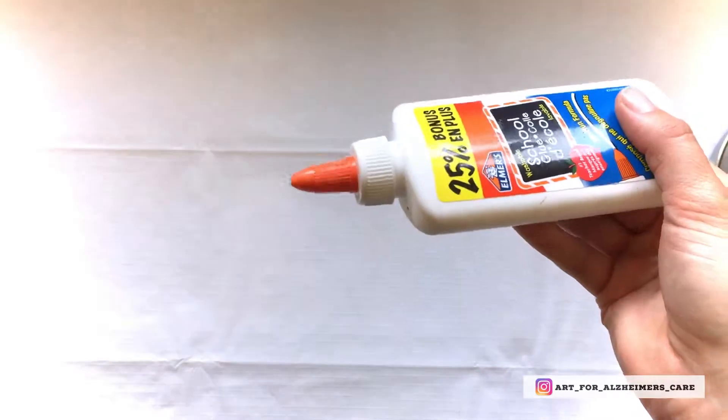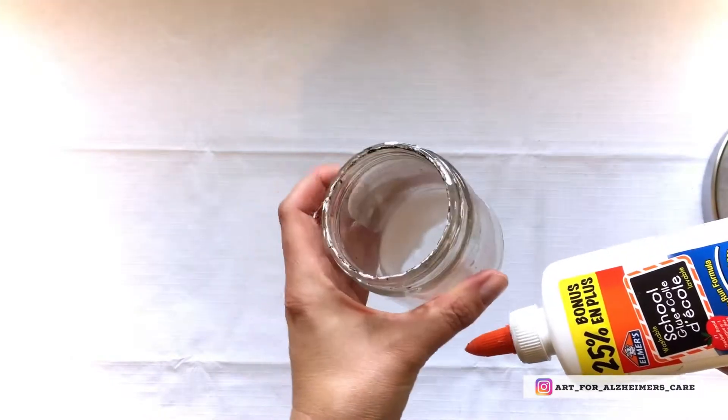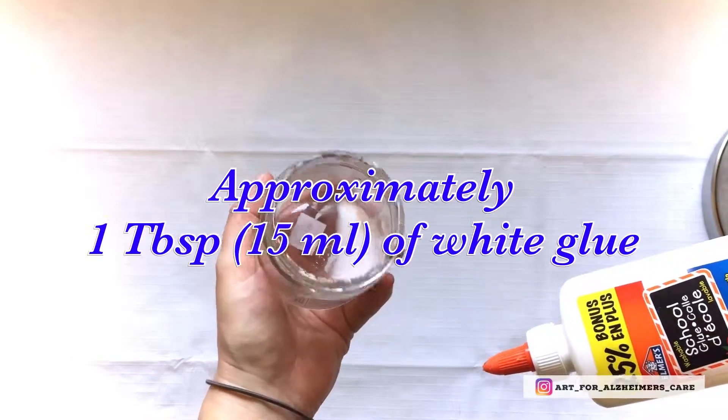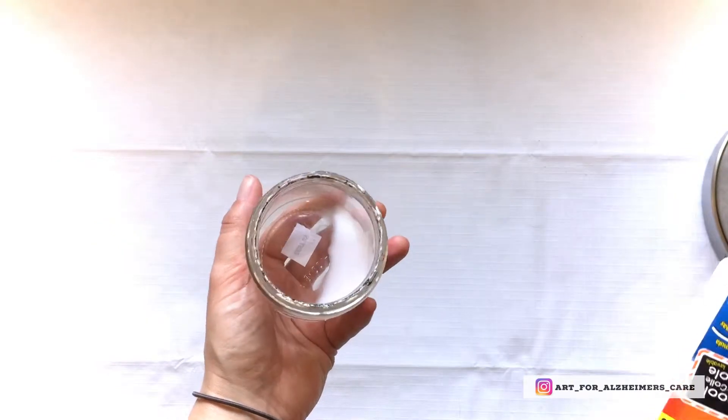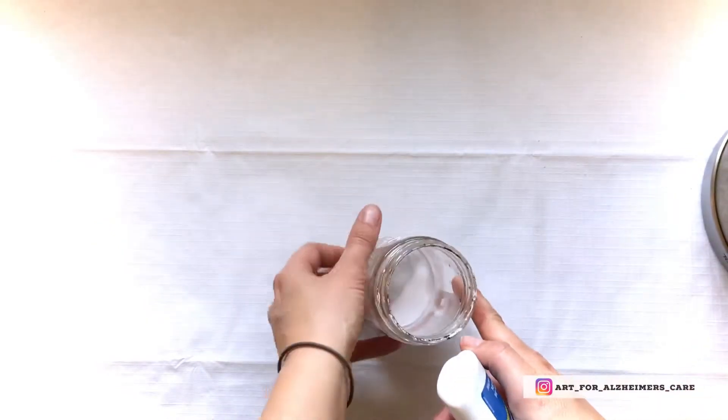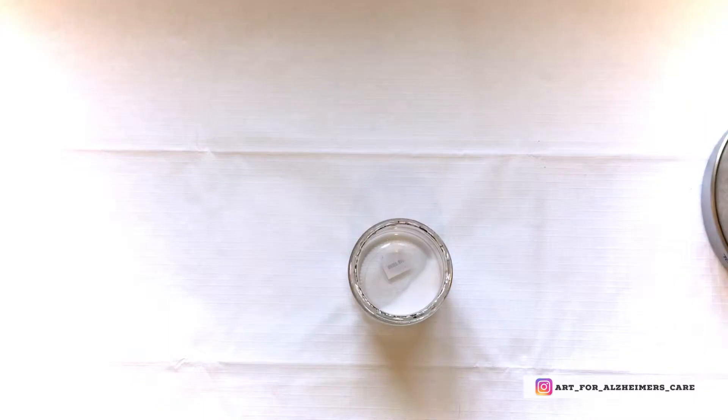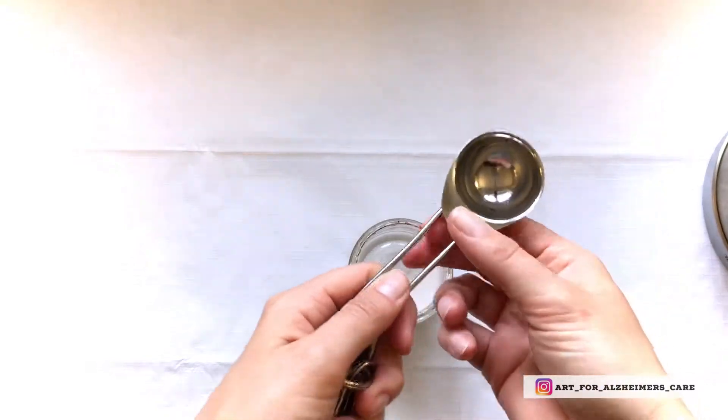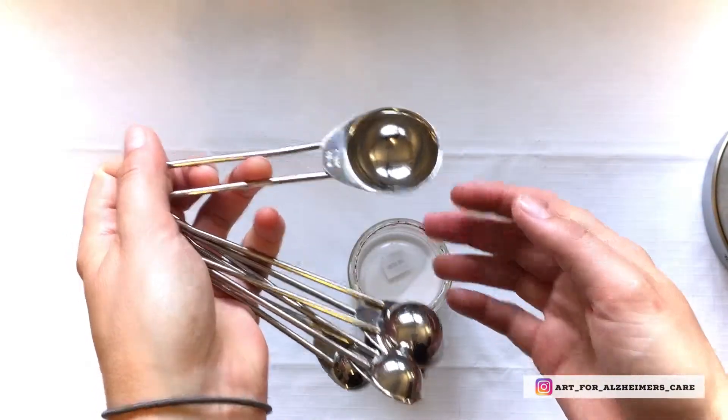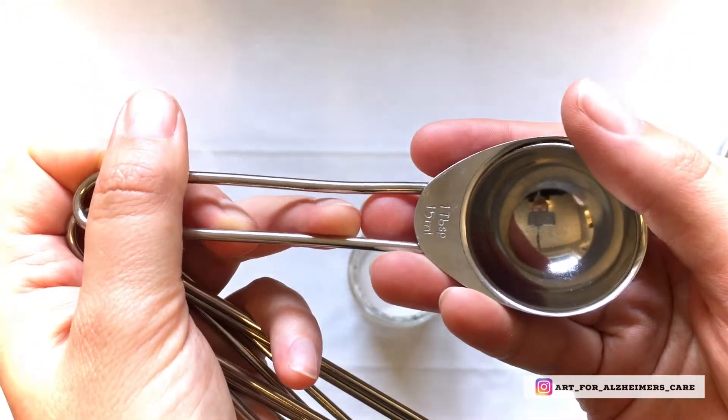So to prep for this project you're going to need to prep some paste that we will use later on with the tissue paper. So I've got about one tablespoon of white glue in this glass jar here and I'm going to add some hot water to the glue. You basically need equal parts of glue and water, and for this project you don't need very much, so I'm just using one tablespoon of each part.